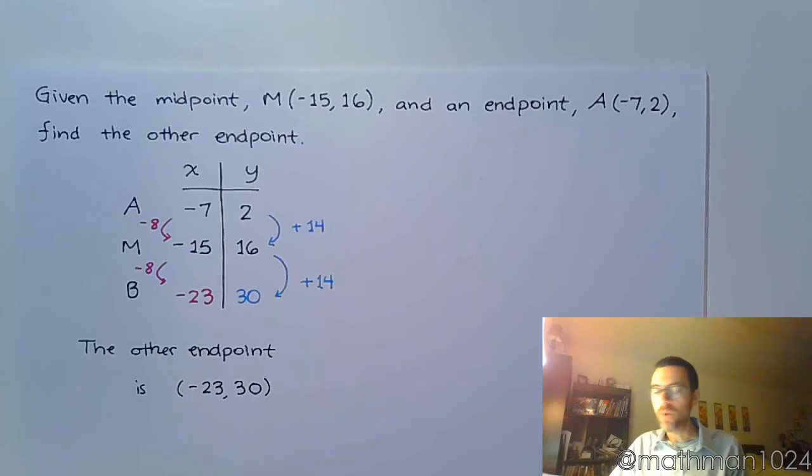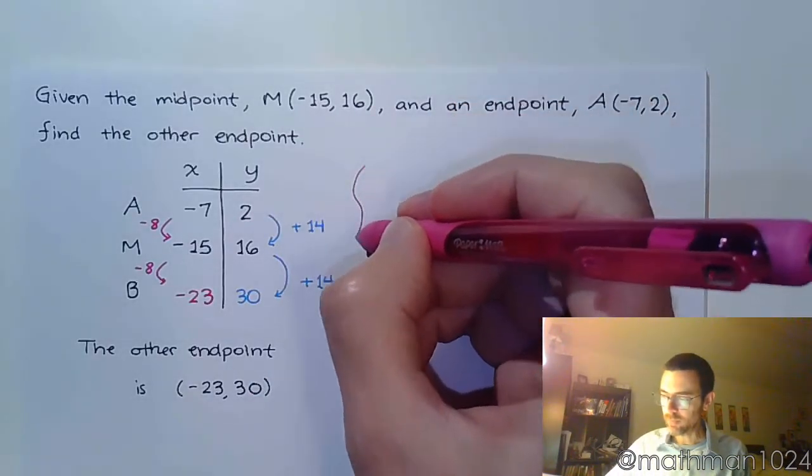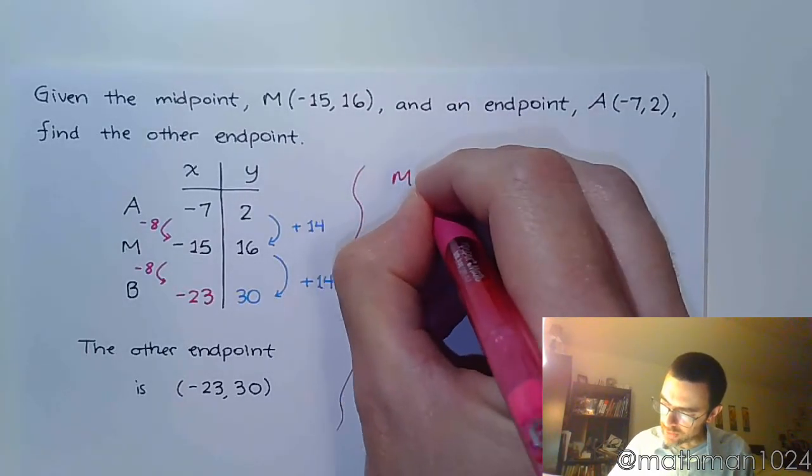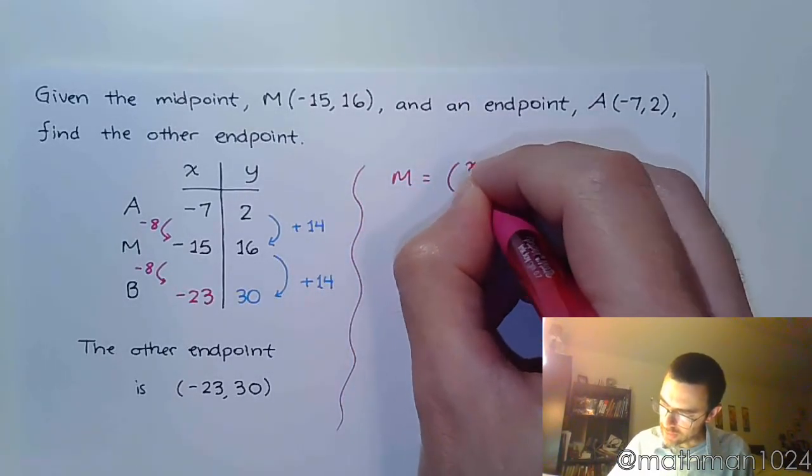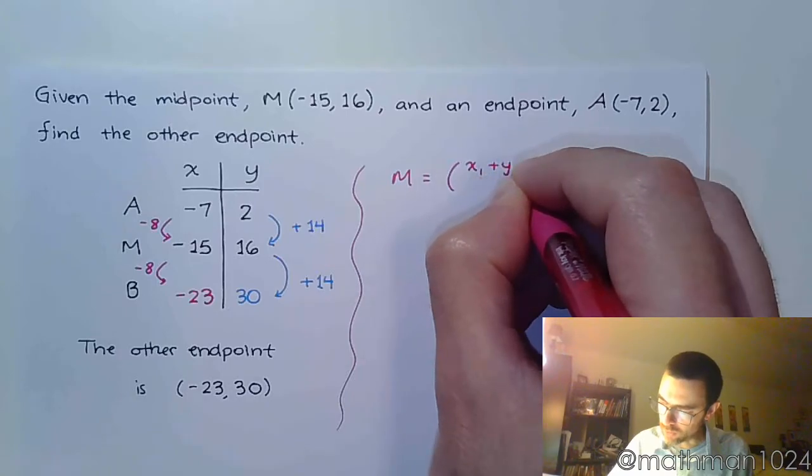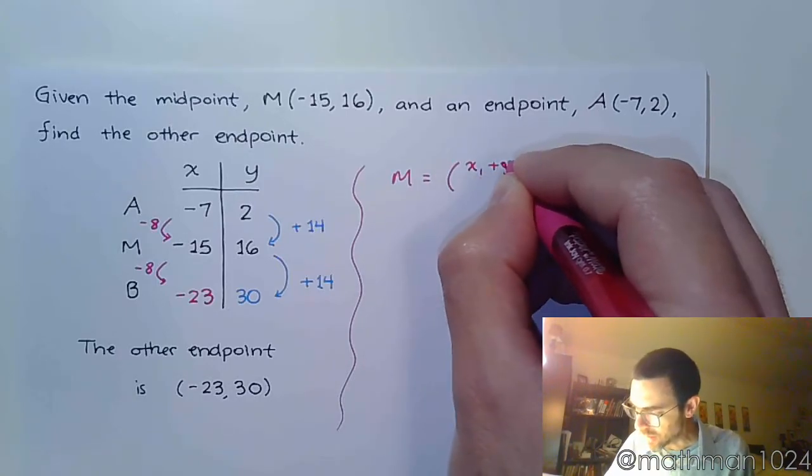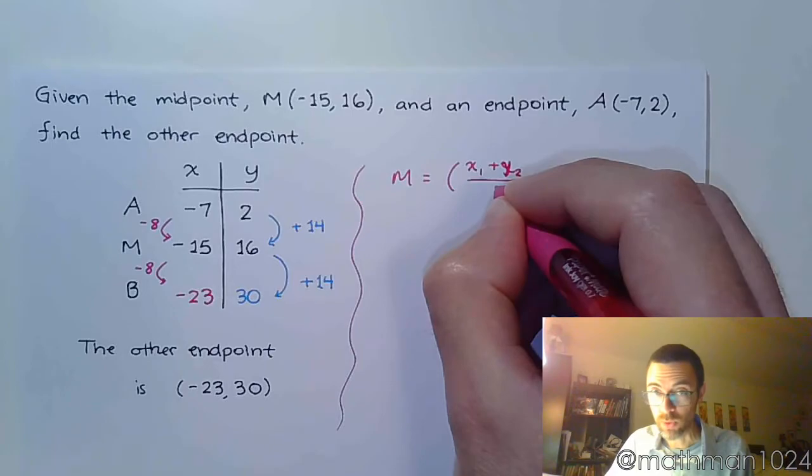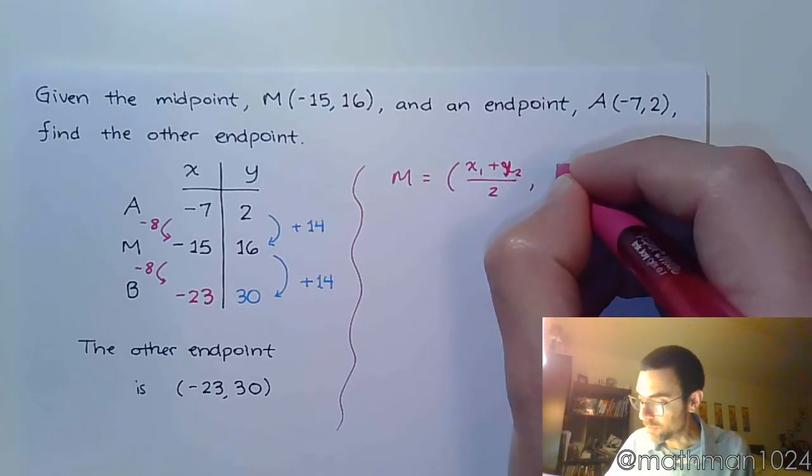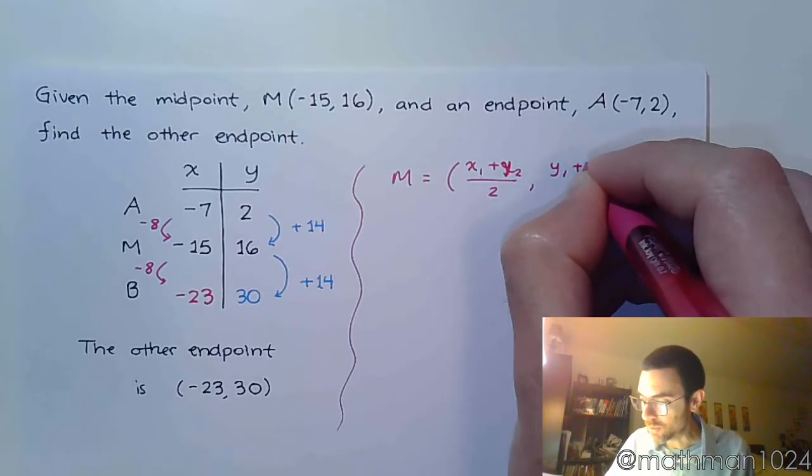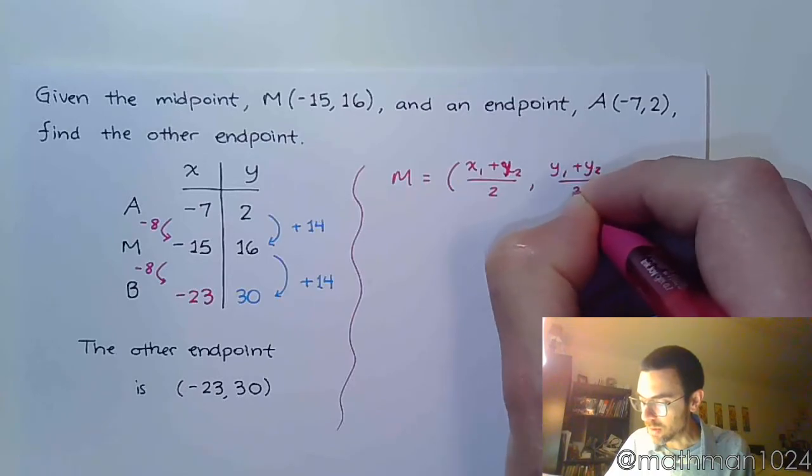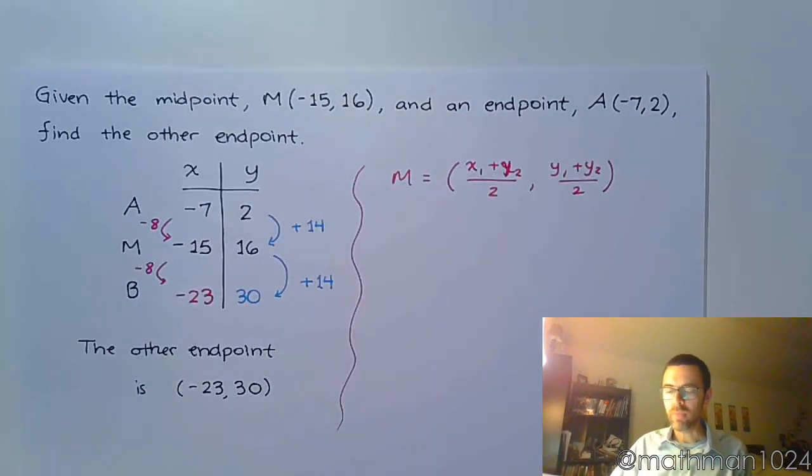Now, there is another way to do this, and that's using that midpoint formula. So remember, the midpoint takes x1 plus x2 over 2, and then y1 plus y2 over 2.